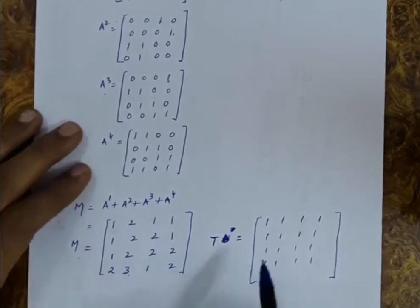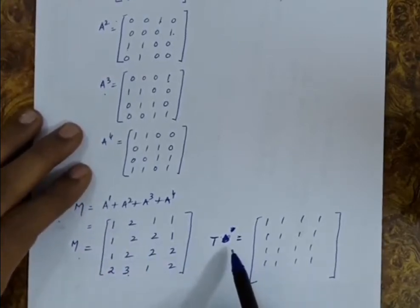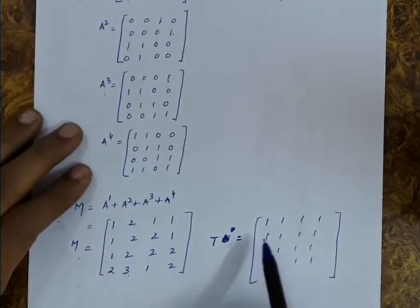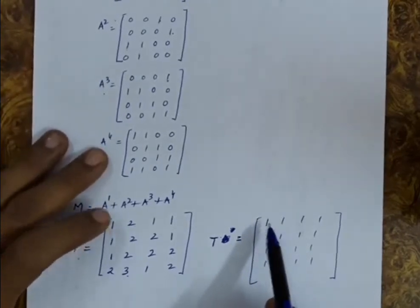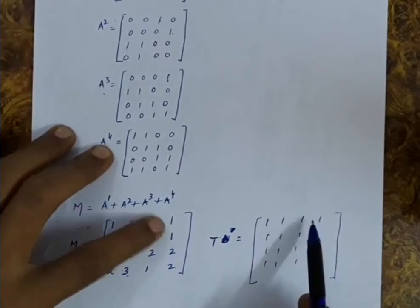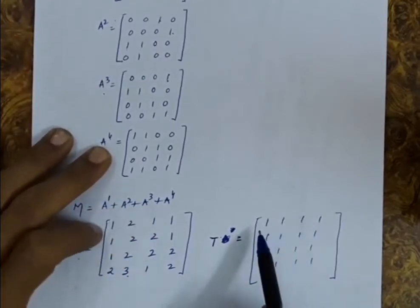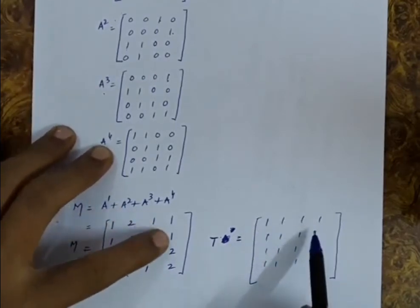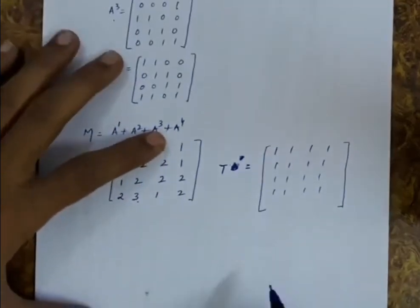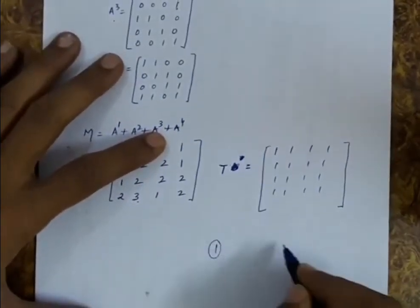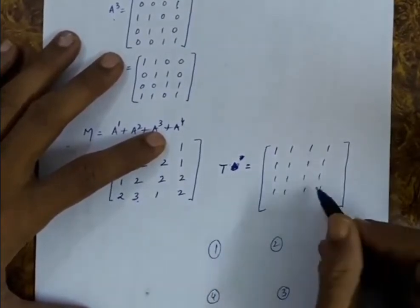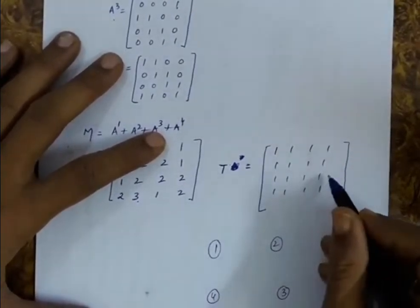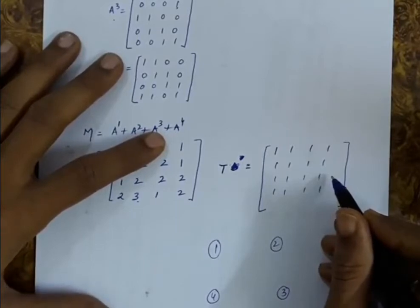From M, I have computed the T matrix, which is the transitive closure matrix. In this transitive closure matrix, all entries which are non-zero have been converted to 1. By this, I find out the transitive closure, which will be taken as the adjacency matrix for the transitive closure.